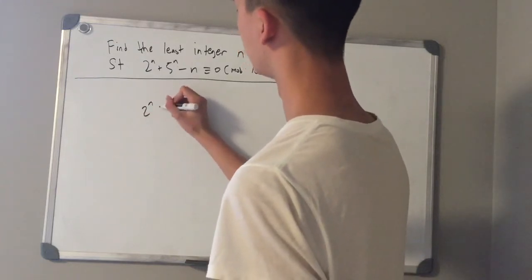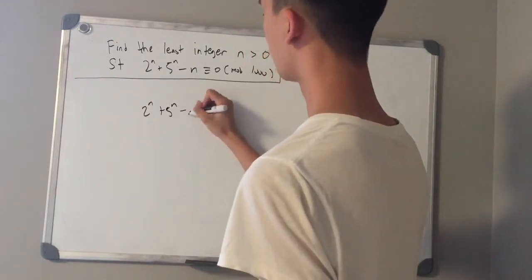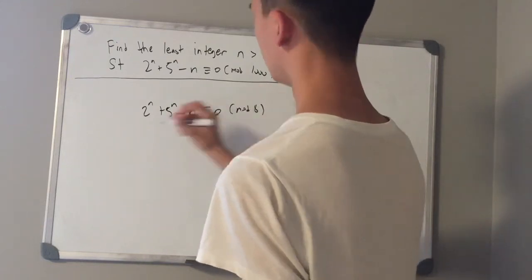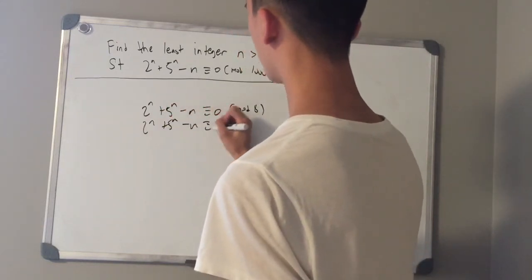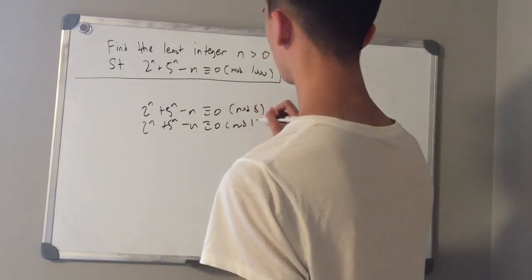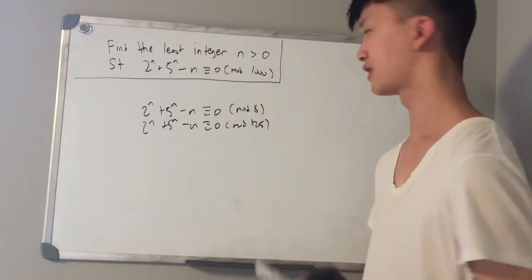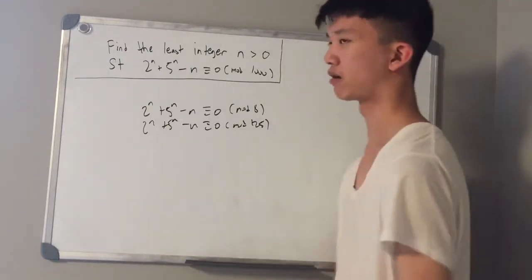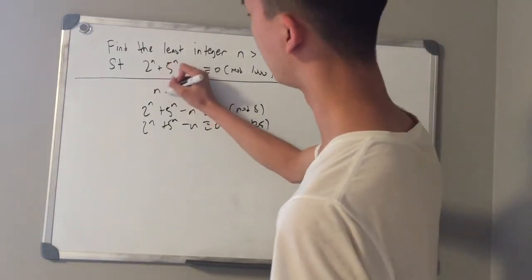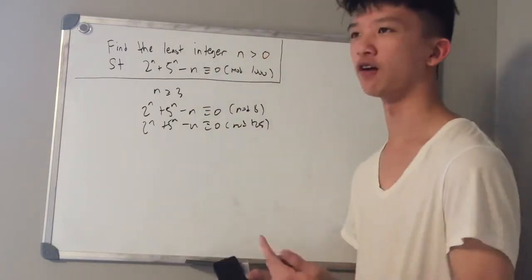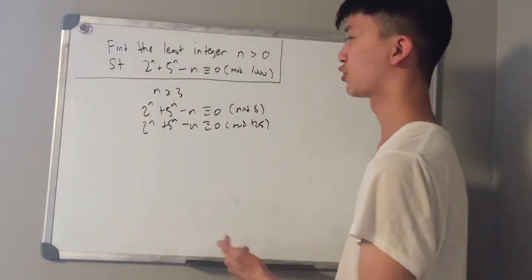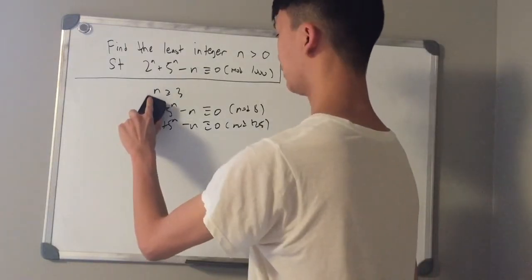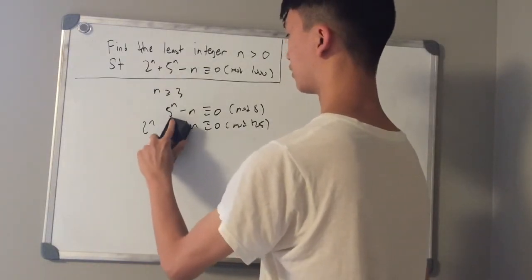So 2 to the power of n plus 5 to the power of n minus n is congruent to 0 mod 8, and the same thing for mod 125. Now notice that 8 is equal to 2 to the power of 3, and 125 is equal to 5 to the power of 3. For all n greater than or equal to 3, we can erase the 2 to the power of n and 5 to the power of n terms from these two equations respectively.